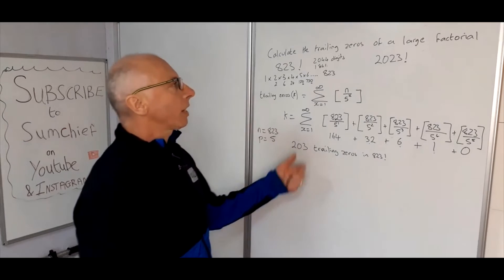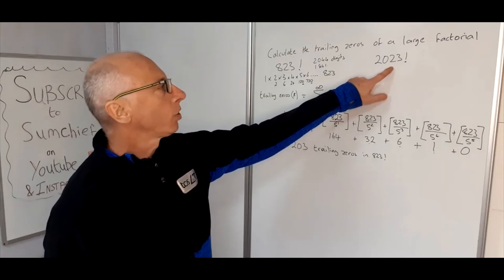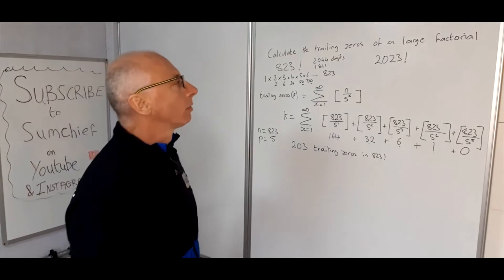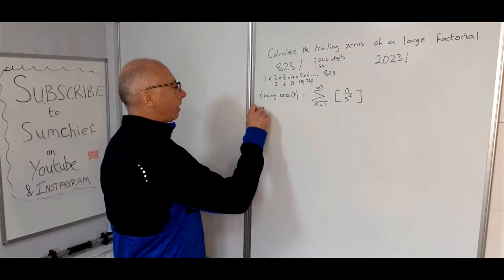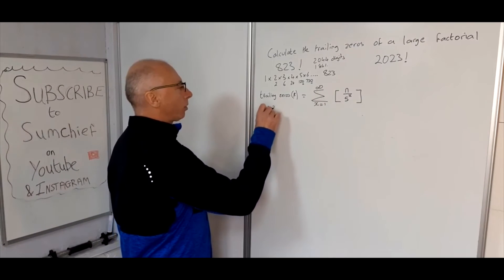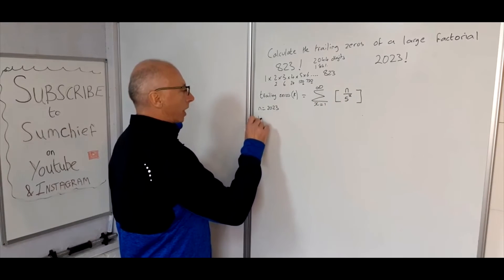And then after that, all you'd be writing would be zeros to get to the end for the 2044. Okay, so that's how we work out 823 factorial's trailing zeros. So now let's move on to 2023.